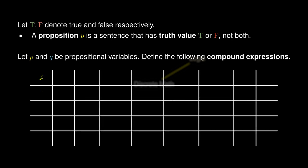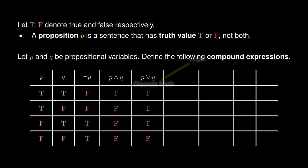Suppose P and Q take on the various possibilities of truth values. The negation of P is true precisely when P is false. The conjunction P and Q is true precisely when both P and Q are true. The disjunction is true precisely when at least one of P and Q is true.